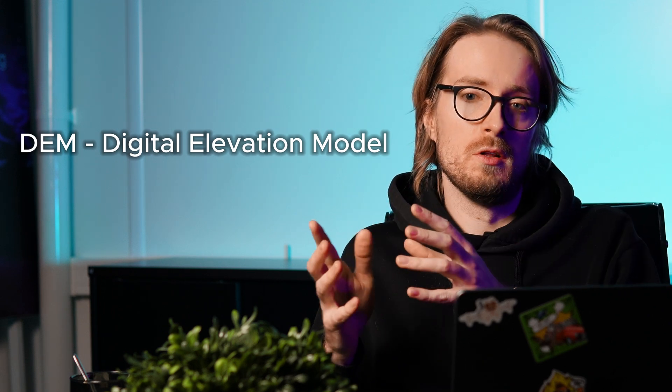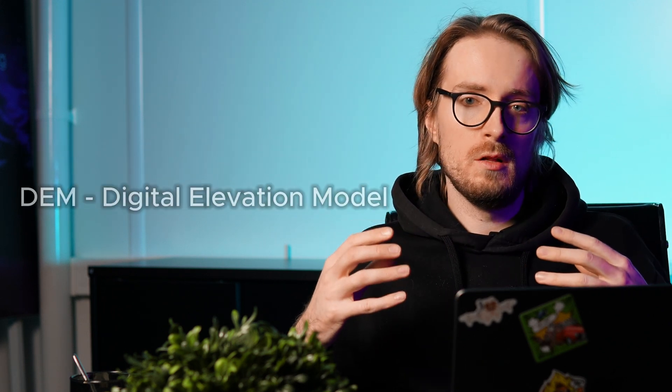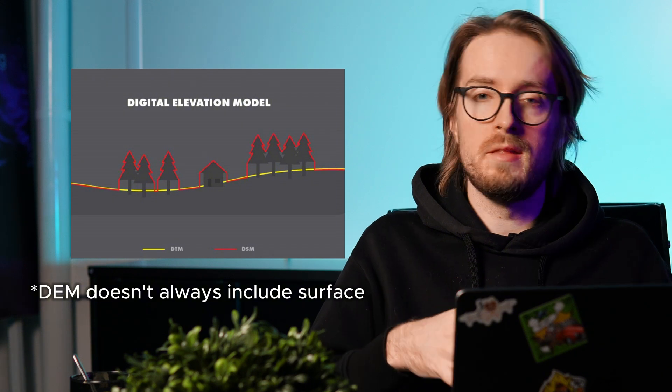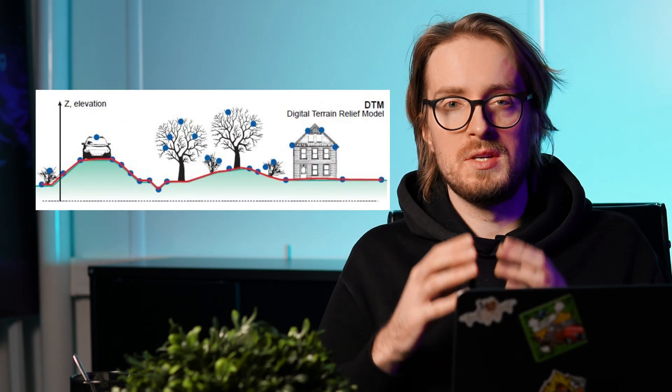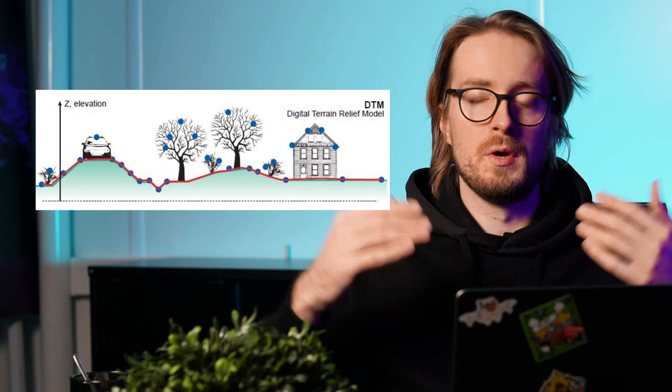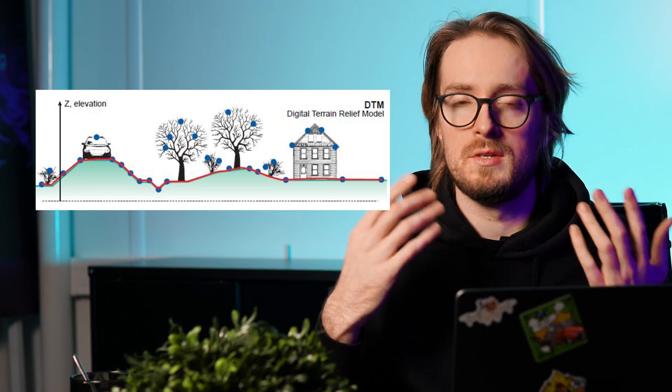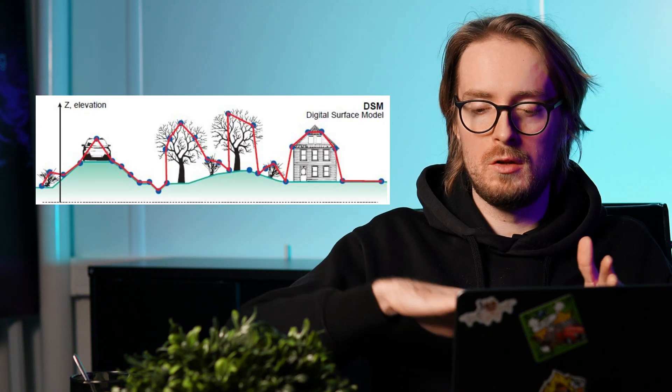Essentially, DEM stands for Digital Elevation Model, and a Digital Elevation Model includes both the terrain as well as the surface. Separately, the DTM — Digital Terrain Model — essentially includes only the points of the terrain, so it doesn't include anything above the terrain such as trees, buildings, etc. While the Digital Surface Model includes everything.